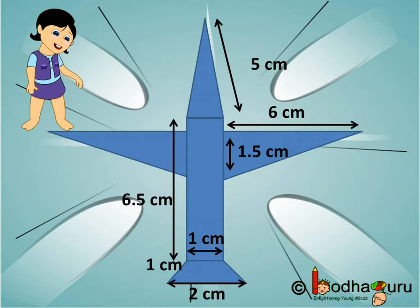Of course, we need to find the areas of individual shapes used in the plane and then sum up. Let us find the area of triangle first.